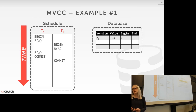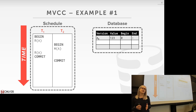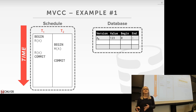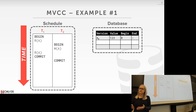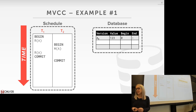In the next two slides we'll go over two examples. What's important to emphasize is that MVCC is independent from concurrency control protocols. The purpose of these examples is to show how we update versions and timestamps in the table, and how we figure out which version is visible to a particular transaction.